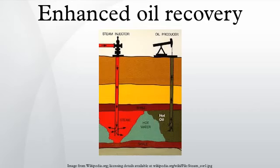Hydrocarbon displacement is where a slug of hydrocarbon gas is pushed into the reservoir in order to form a miscible phase at high pressure. However, this suffers from poor mobility ratio, and the solvent's ability to dissolve the oil is reduced as it moves through. As with all methods, this is only attempted when it is deemed economical.